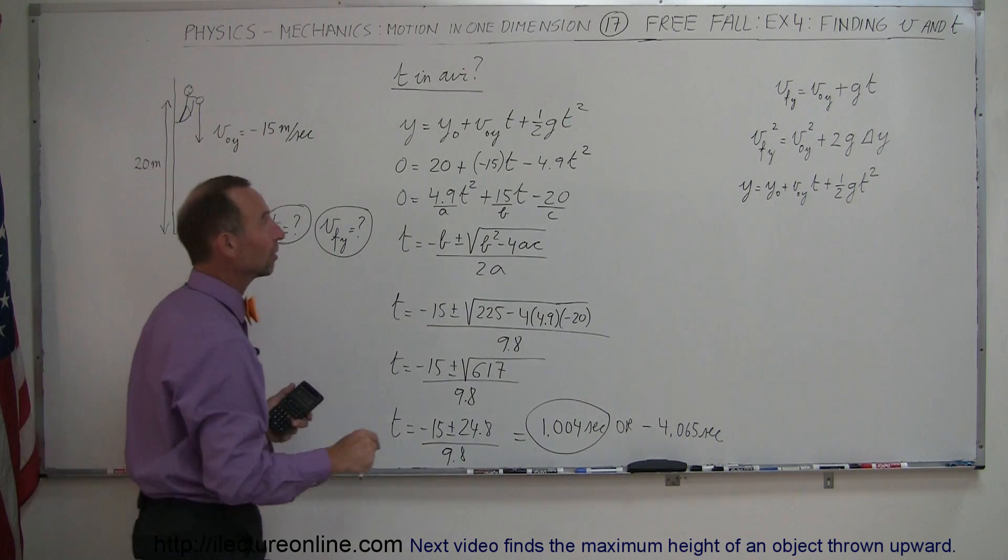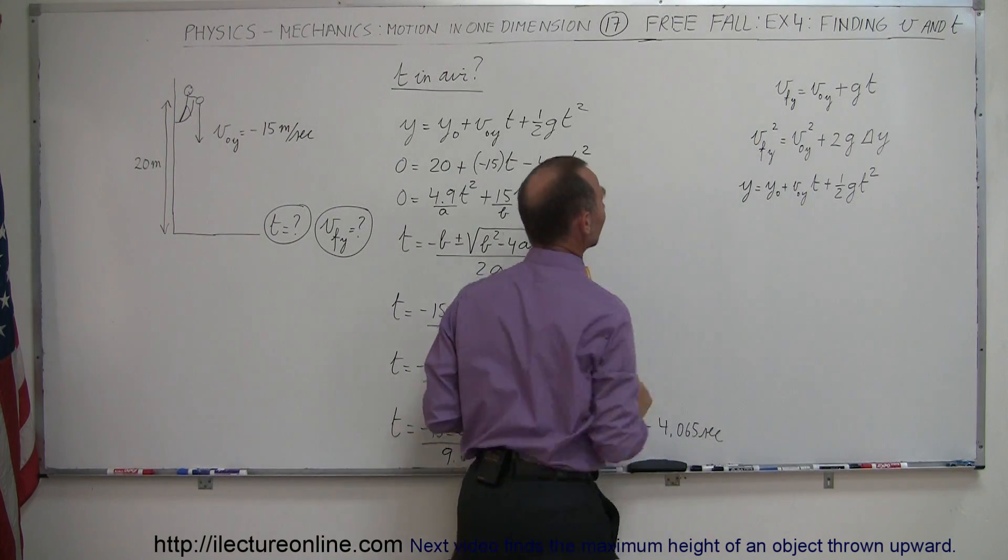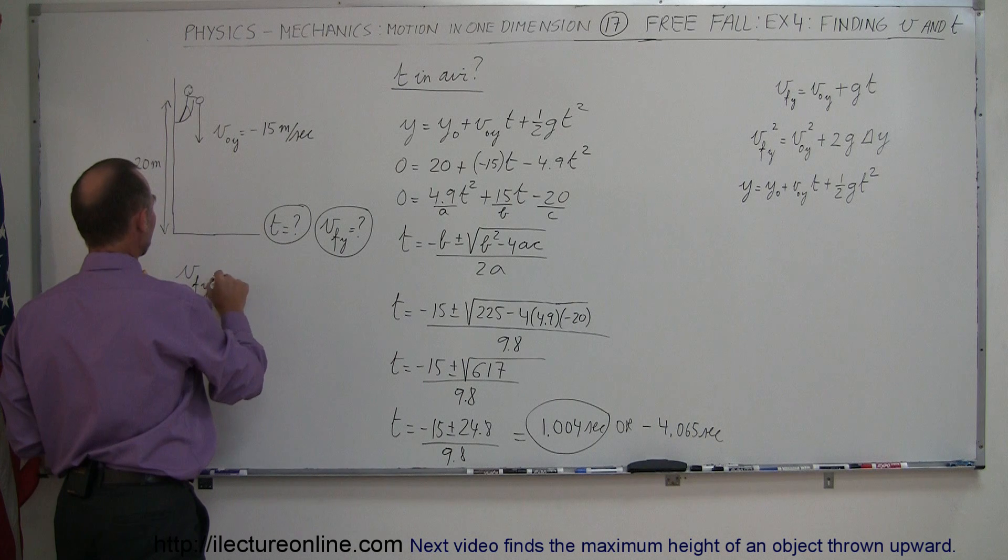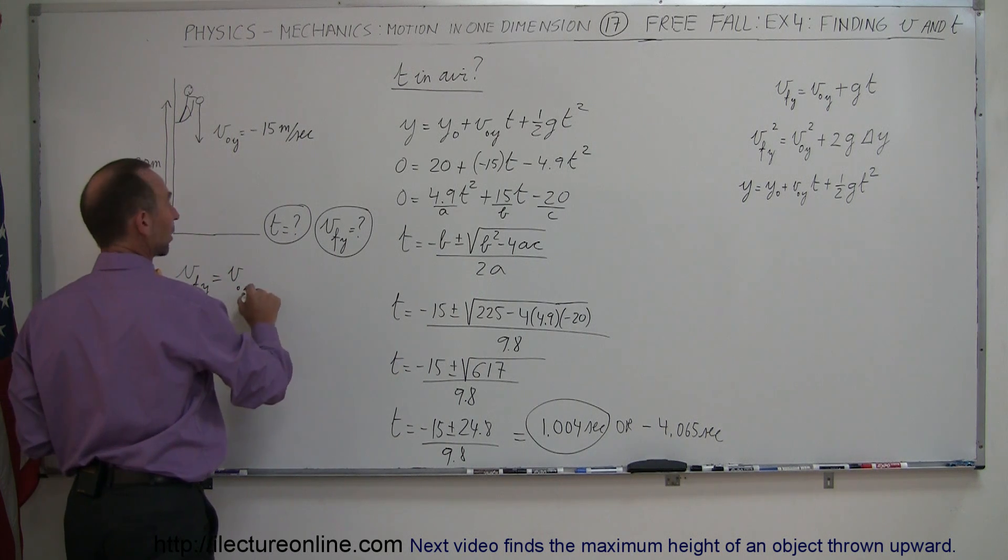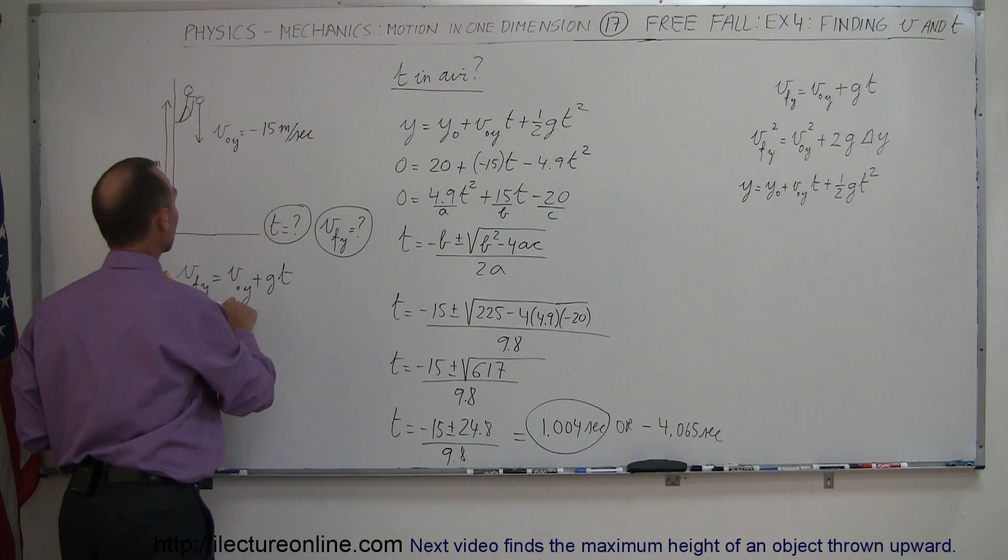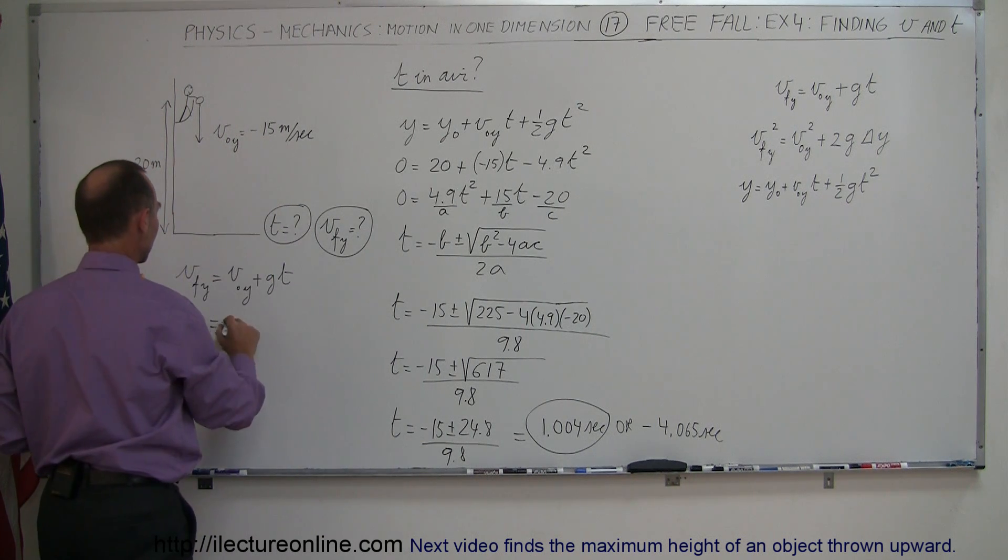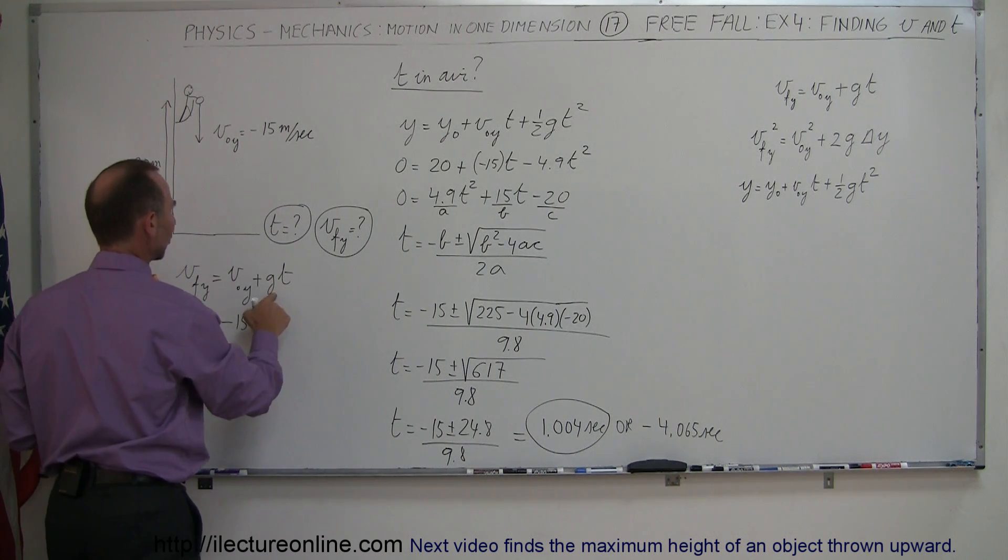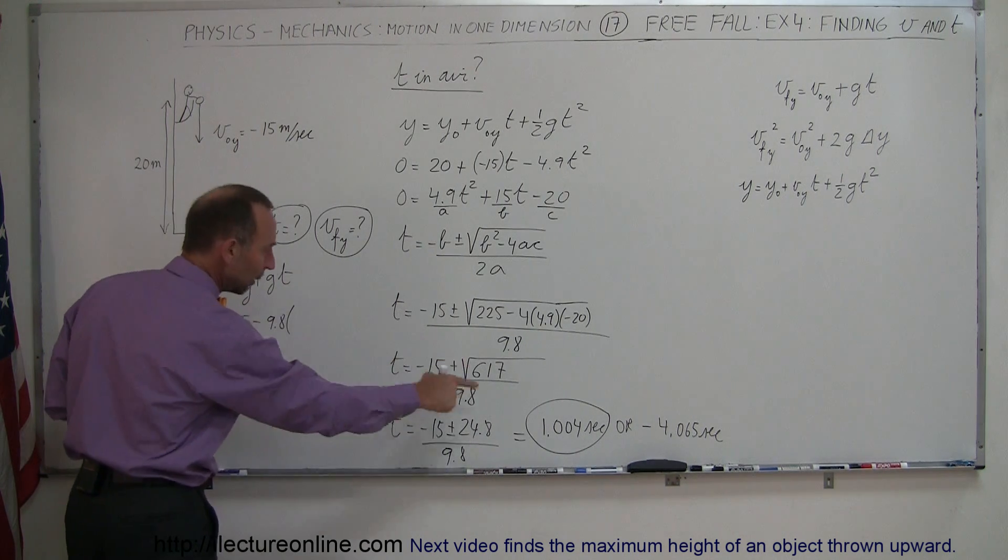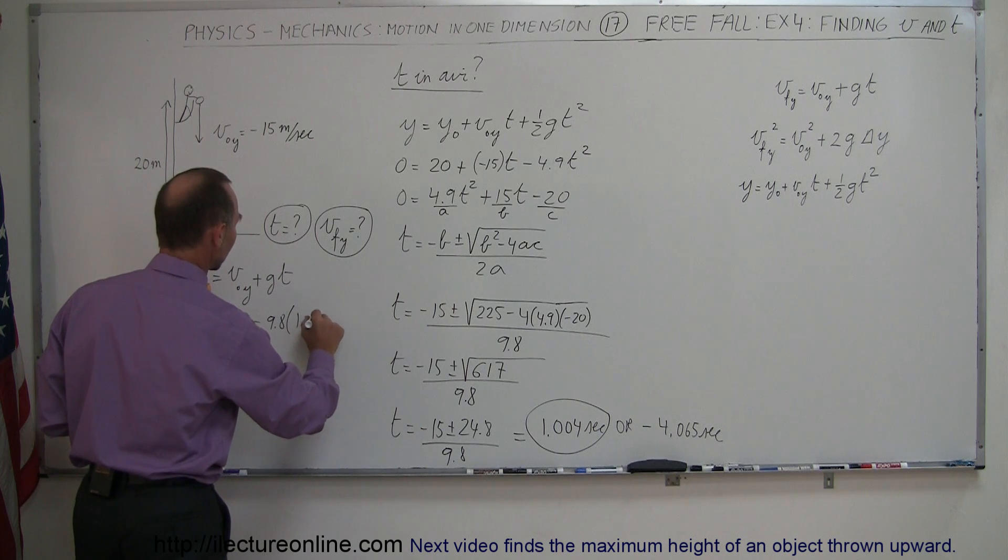for the final velocity, we're going to take this first equation right here, final velocity. So V final in the y direction is equal to V initial in the y direction plus G times T. The initial velocity in the y direction is a minus 15 meters per second, so we write minus 15. Of course, G is a minus 9.8, so we write minus 9.8 times the time, 1.004 seconds.